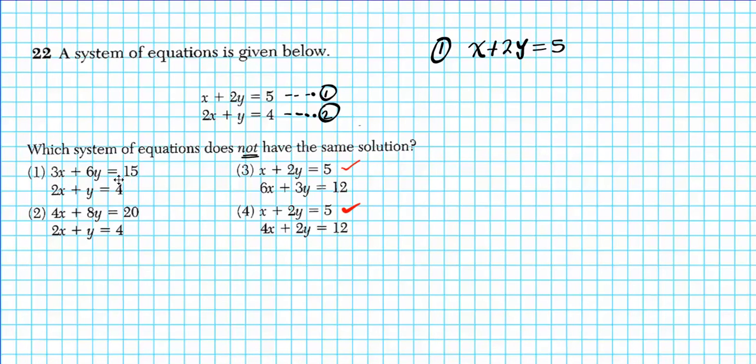Now we notice that in 1 and 2, we have integer multiples of the first equation. For equation 1, the first equation looks like it was tripled, and then equation 2 looks like it was quadrupled. So let's see what happens. If we triple equation 1, 3(x + 2y) = 5, do we get the first equation in option 1? Let's see. So distribute 3 to everything, you have 3x + 6y = 15. So this is perfect.